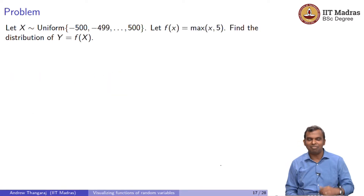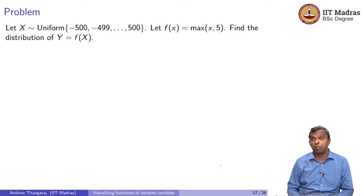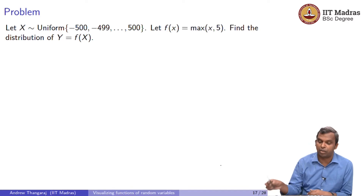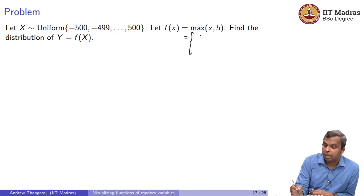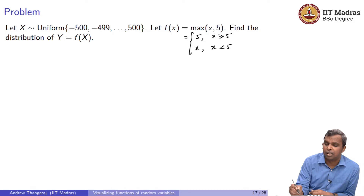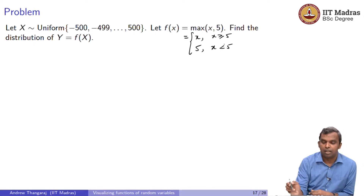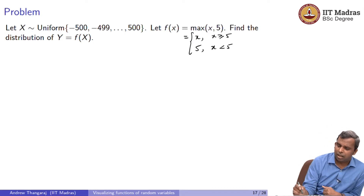The next problem makes it very big. X is uniform from minus 500 to plus 500 — it takes 1001 values, which seems scary. But you can still make a table when the function is just max(X, 5). What is max(X, 5)? The function equals 5 if X is less than 5, and equals X if X is greater than or equal to 5.